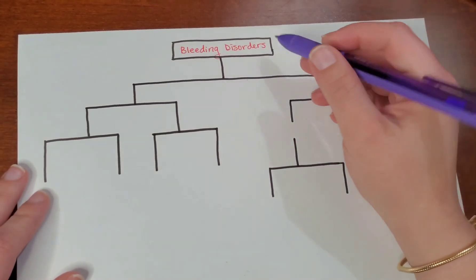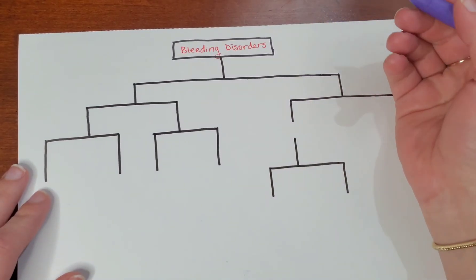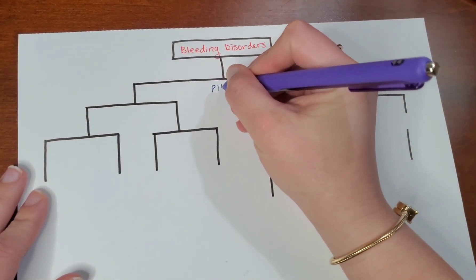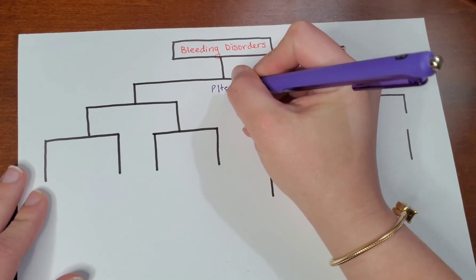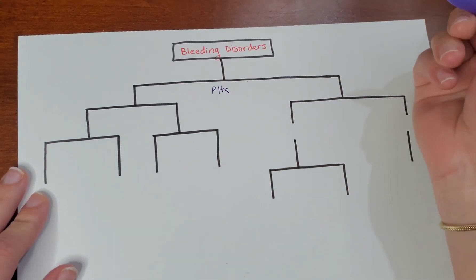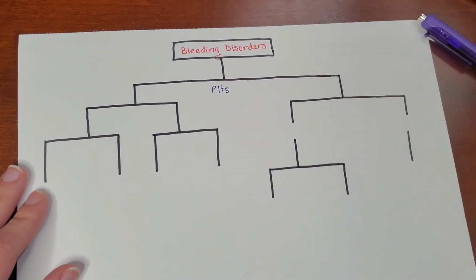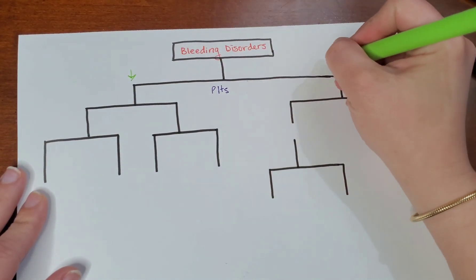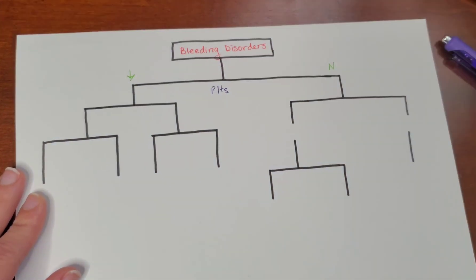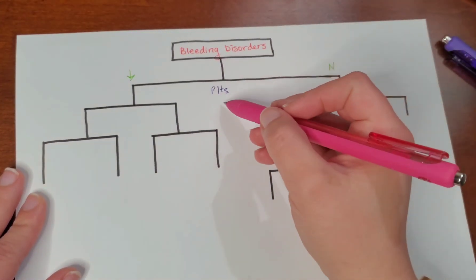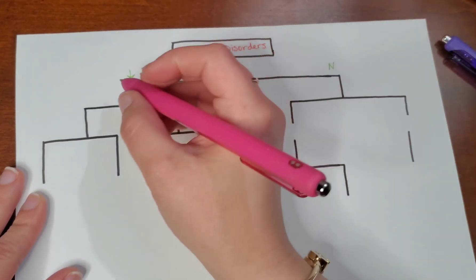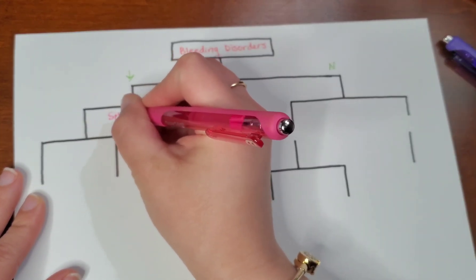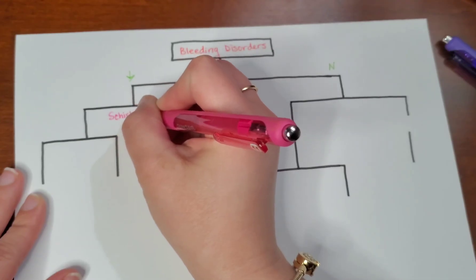When you're dealing with bleeding disorders, I want you to first think of the platelets. Look at the lab values in the question. Are the platelets decreased or are they normal? If the platelets are decreased, the next question I want you to ask is: are there schistocytes?